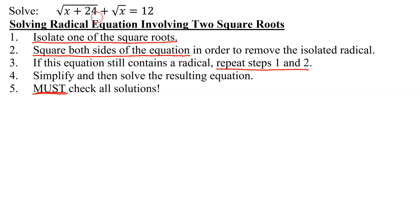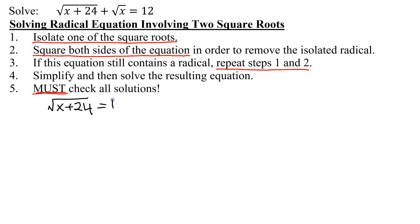Looking at our equation, I have to isolate one of the square roots. Does it matter which one? No. So I'm going to isolate the square root of x plus 24, which means I'm going to subtract the square root of x from both sides of the equation. So I'm going to get the square root of x plus 24 equals 12 minus the square root of x.